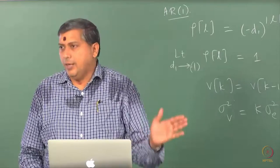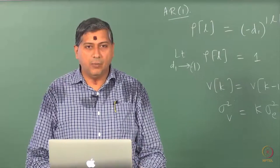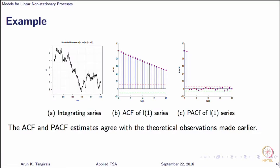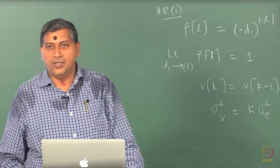The sample ACF decays extremely slowly for an integrating process, but the exact behavior cannot be known. Here I have an integrating series and I am showing you the ACF — the sample ACF is decaying slowly. Depending on the realization, the decay can be even slower, but the general qualitative observation is that all integrating processes have this kind of signature. Do we rely on this signature to detect integrating effects formally? No — formally, you have to conduct unit root tests.